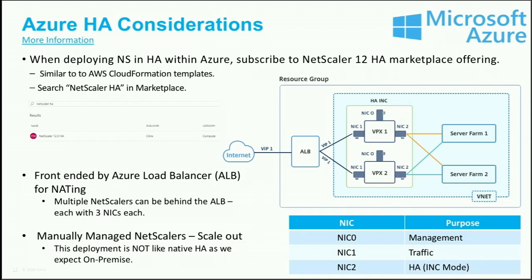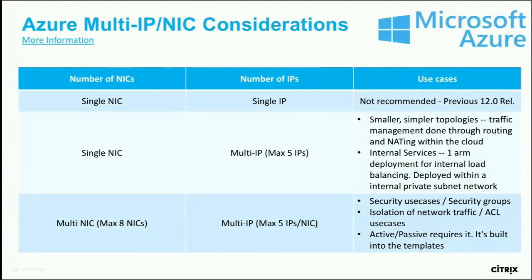We integrate with ALB by placing it in front of the NetScaler, configured in what's called direct server return (DSR) mode. The purpose is to provide failover for the NetScaler itself. Rather than using NetScaler HA natively, we use ALB because the network in cloud providers isn't conducive to having an IP address move between devices automatically. ALB does health checks to each NetScaler, and when you do an HA transition using independent network config, ALB picks up that the other NetScaler has gone active. It's not stateful failover, but it allows you to maintain persistence quickly.